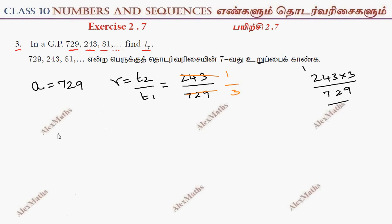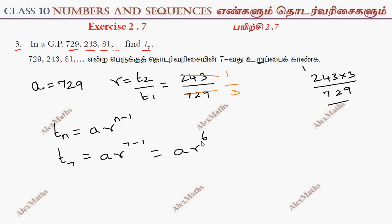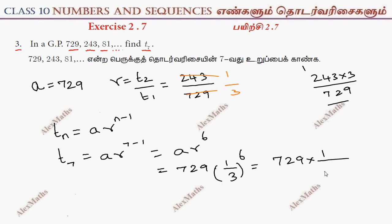This is the TN formula: T_n = A · R^(n−1). Now T7 is A · R^(7−1), which is A · R^6. A is 729 and R^6 is (1/3)^6.